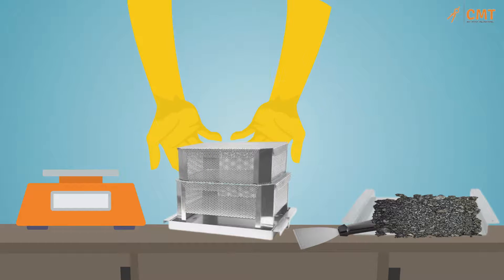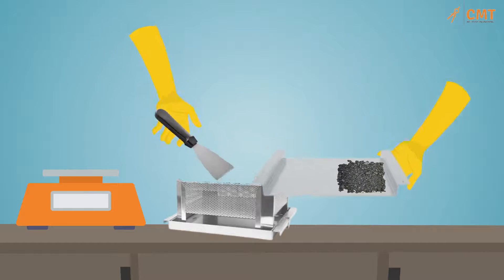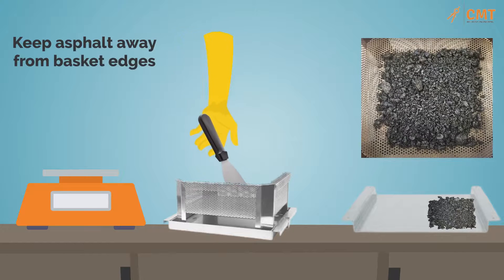Remove the top basket and set it aside. Place approximately half of the sample in the bottom basket. Make sure the sample is evenly distributed in the basket and move the mix away from the basket edges to prevent material loss during testing.